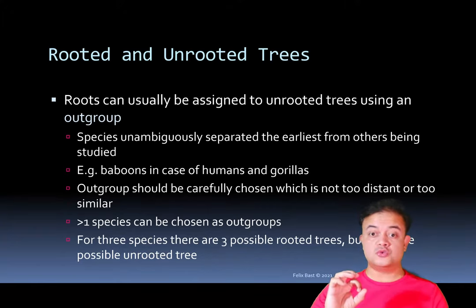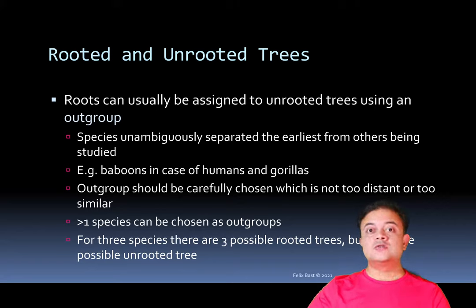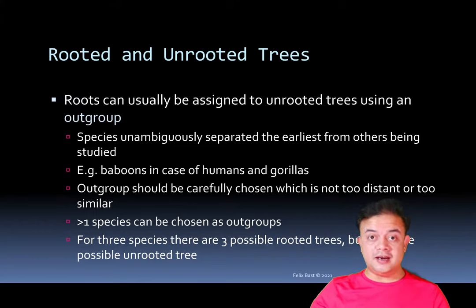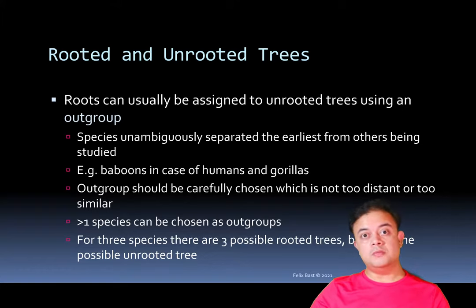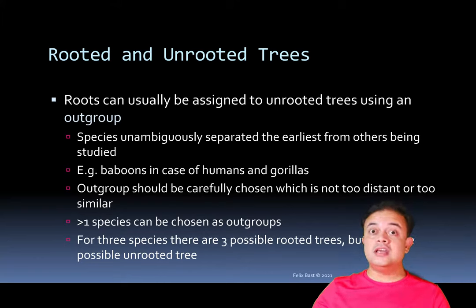The outgroup must be carefully chosen — not too distant and not too similar. If it is really too distant, it can cause problems with the topology of the ingroup and severely constrain it, especially if you are using maximum parsimony. For example, if making an angiosperm (flowering plant) tree and you use algae as an outgroup, that is too distant. If you use an ANITA grade as an outgroup, that is too similar. A gymnosperm or ginkgo could be a good option. The outgroup can be more than one operational taxonomic unit.